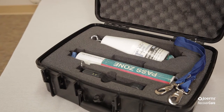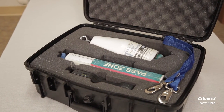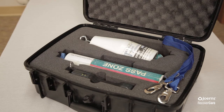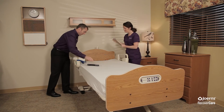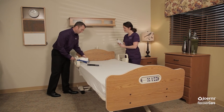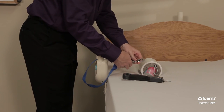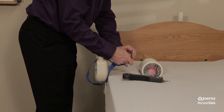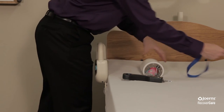The total weight of the cone and cylinder combined is 15 pounds, representing the combined weight of a human head and neck. Attach the safety strap each time using the device to avoid injury. A two-person team can validate a complete bed system in 15 minutes. This method of bed entrapment testing will take into account mattress compressibility, loose rails, and loose panels.